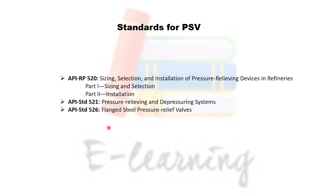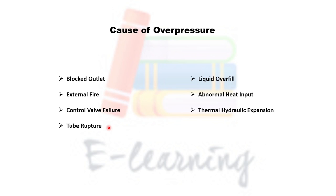There are certain standards for sizing and installation of this important valve. I have enlisted three standards: API 520, API 521, and API 526. These are very important standards and recommended practices that discuss the sizing and installation of PSVs. Whenever a process engineer designs or sizes a pressure safety valve, they would look into and follow these standards.